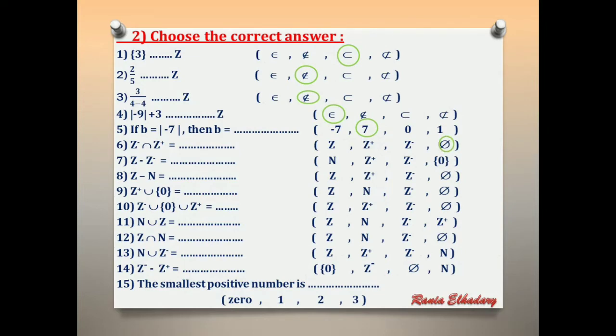Number 7: Z difference Z negative. If we subtract Z negative from Z, the remainder is N. Number 8: Z difference N. If we subtract N from Z, the remainder is Z negative.